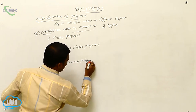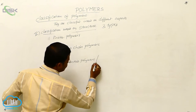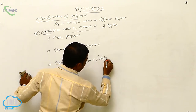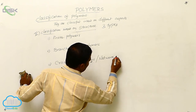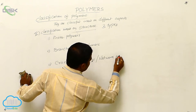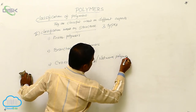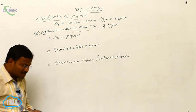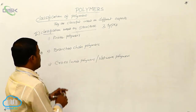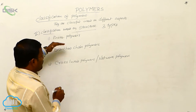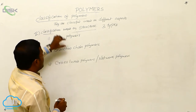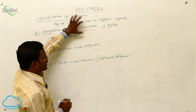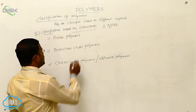Cross-linked polymers are also called as network polymers. These are the polymers classified based on the structure present inside the polymer.